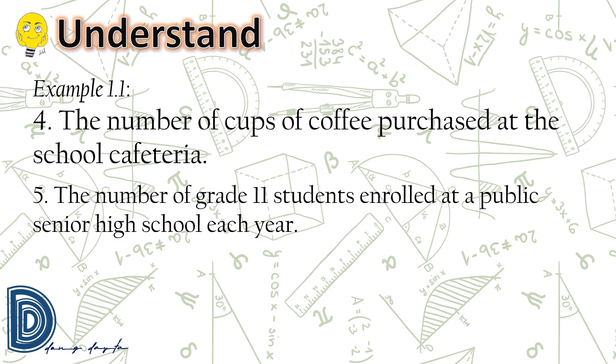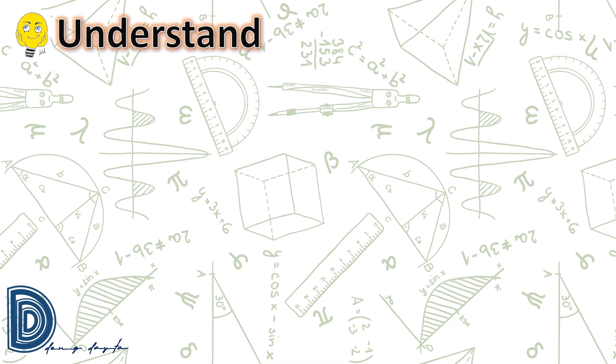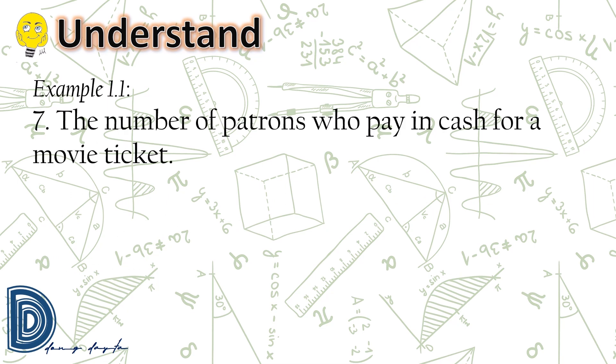The number of grade 11 students enrolled at a public senior high school each year is a discrete random variable. The number of customers in a fast food chain. The number of patrons who pay in cash for a movie ticket.